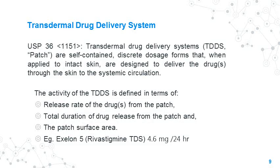I shall now briefly introduce the transdermal drug delivery system. According to USP, transdermal drug delivery systems, also called patches, are self-contained discrete dosage forms which, when applied to intact skin, are designed to deliver the drug through the skin to the systemic circulation. The strength of the transdermal system is defined in terms of patch activity: the release rate of the drug from the patch, total duration of drug release, and the patch surface area. For example, Exelon 5 — a rivastigmine transdermal system manufactured by Novartis — has a strength of 4.6 mg per 24 hours for a patch size of 5 cm². Transdermal patches are generally dose proportional and are cut from the same laminate, giving different strengths of patches.